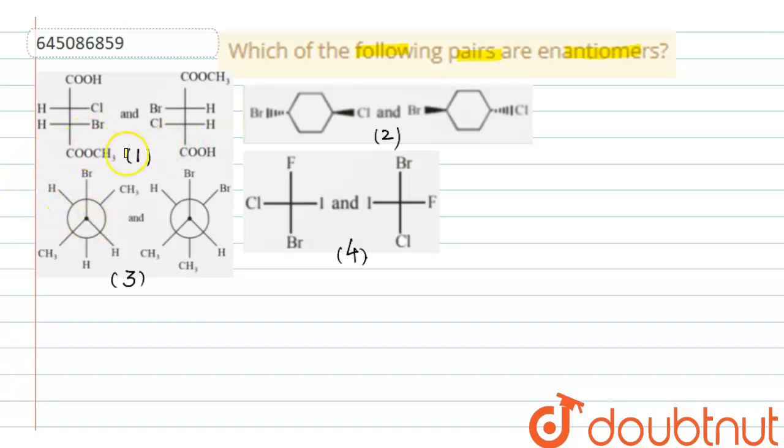Now in the first compound, if we see this one, rotation on the plane of the paper will give this compound. Or we can find out the R-S configuration of the two carbon atoms and the R-S configuration will be saved. So let us check.